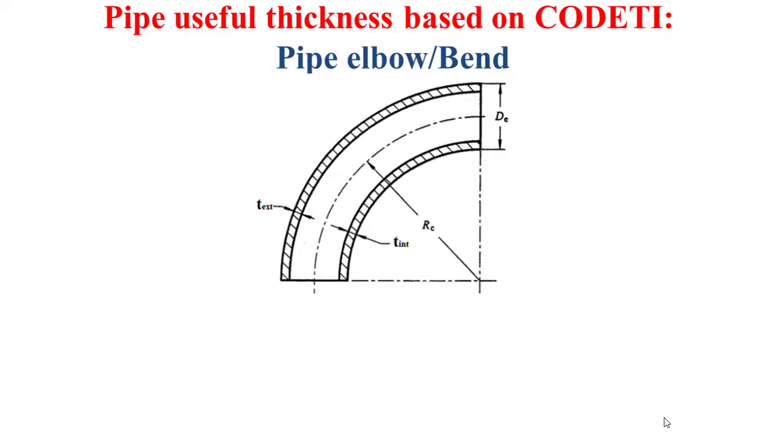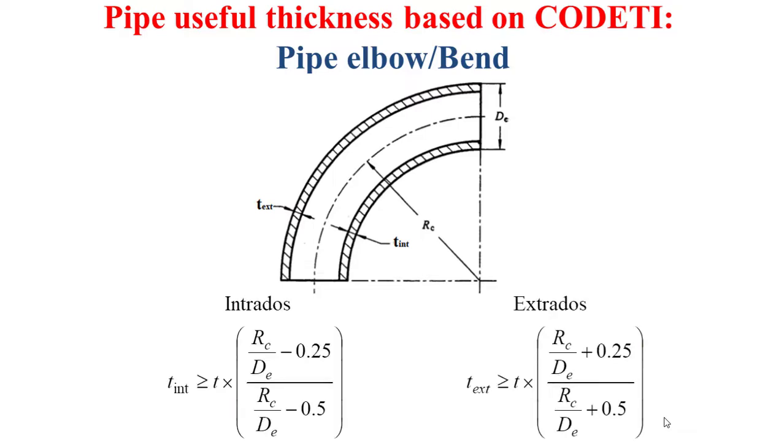you can notice that the internal thickness, which is the intrados thickness, is different from the external thickness, which is the extrados thickness. And these two types of thicknesses are obtained by the formulas that you see now in this slide.